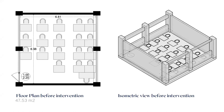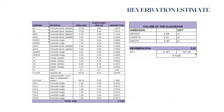This is the floor plan before the intervention. As we can see, it's very simple. It's just composed by four windows, a door, and the walls and the whiteboards. We can see also a symmetric view before the intervention, and it's the base where we started off before we designed it.